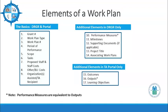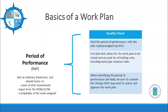Let's look at the period of performance. The takeaway here is that the period of performance should not be a random timeframe. You should consider the level of HUD involvement, the input from the POTAC or GTM, and the complexity of the work assigned. Your start date should not be any earlier than the assignment of the work, and the end date should allow for travel and costs to be accounted for and give you enough time to close the work plan. When identifying a period of performance for a task, recipients should factor in the GTR 30-day review period, so all tasks may not have the same start date as the overall work plan start date.